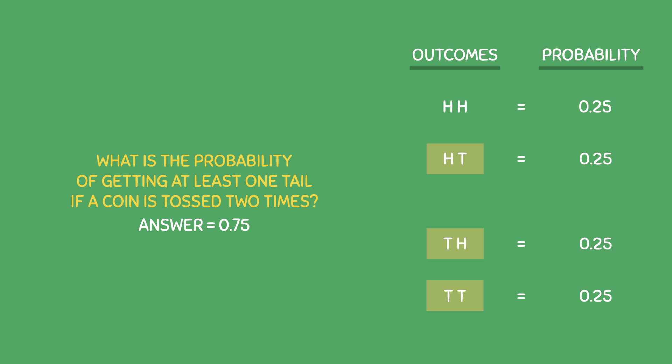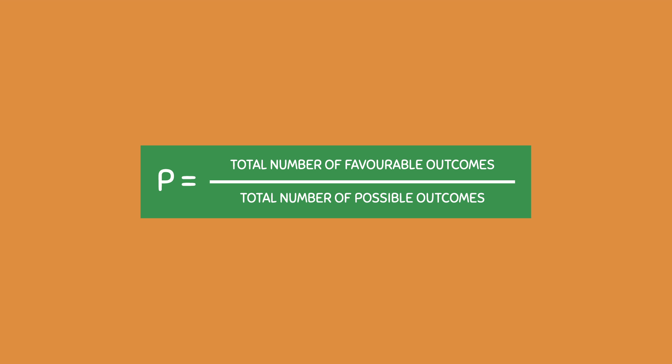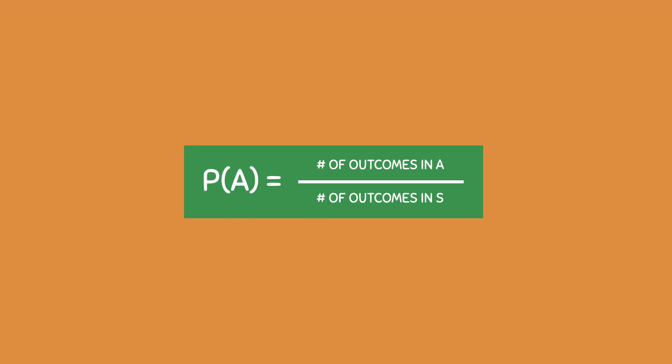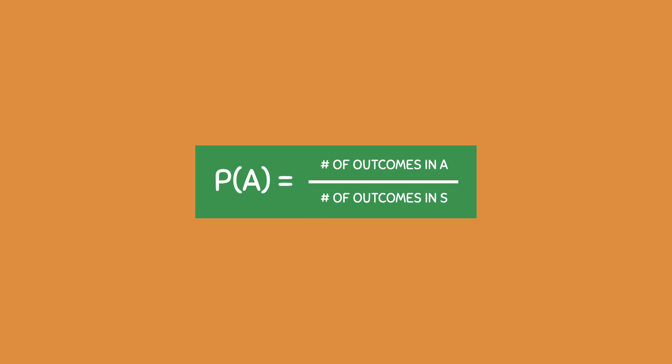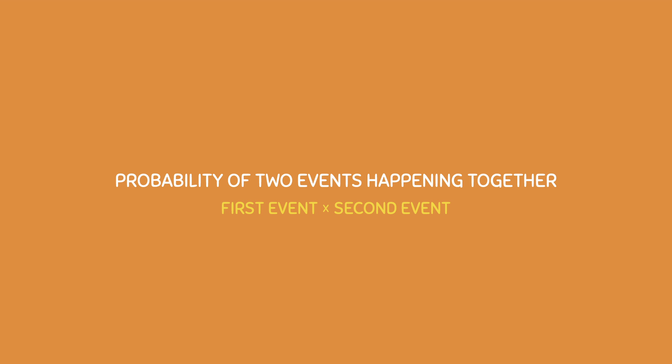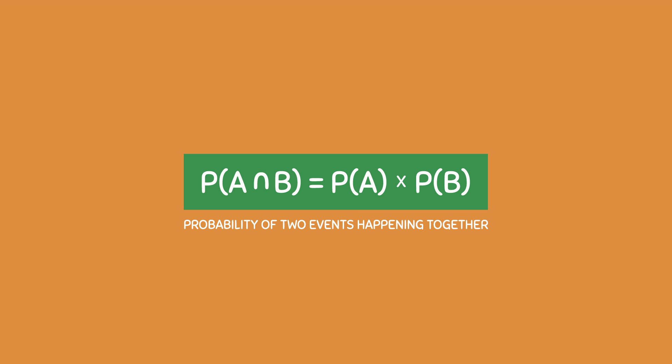Before we continue to the last part of the video, let's quickly recap. We define probability as the total number of favorable outcomes divided by the total number of possible outcomes. However, we can properly write this as: the probability of event A occurring is equal to the total number of outcomes in A divided by the total number of outcomes in the sample space. And to find the probability of two events happening together, all we have to do is multiply the probability of the first event by the second event. This can be written as: the probability of A and B is equal to the probability of A times the probability of B.